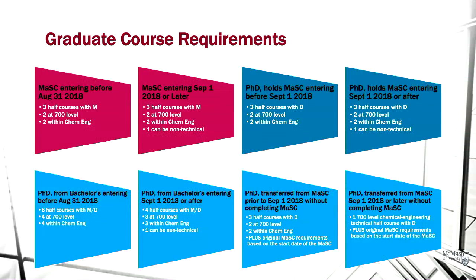For course requirements: master's students who entered before fall 2018 — I don't think we have any in this category anymore — need three half-courses, two of the three at the 700 level, two of the three within Chemical Engineering, and all three must be technical engineering courses.